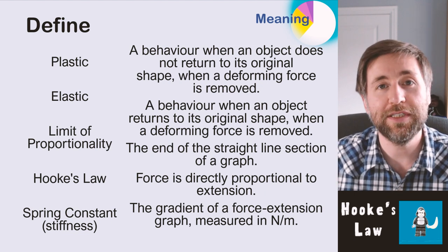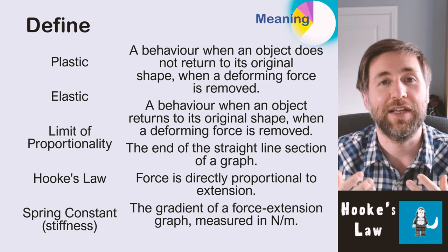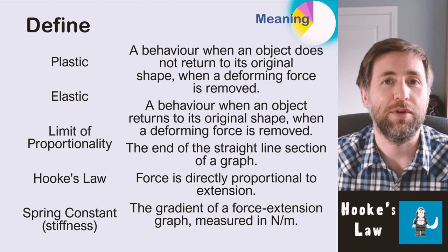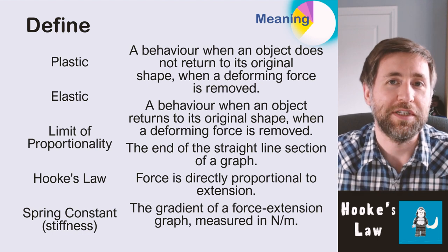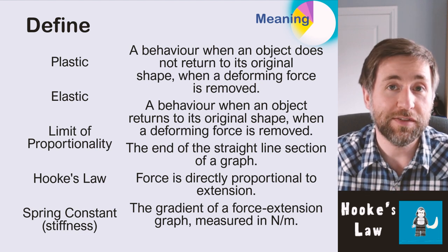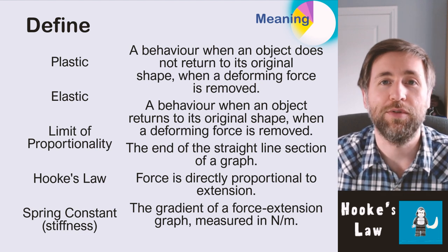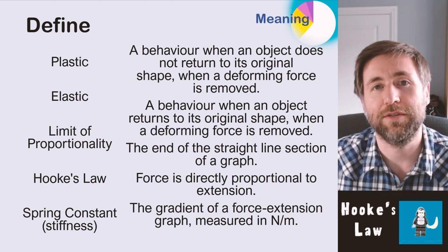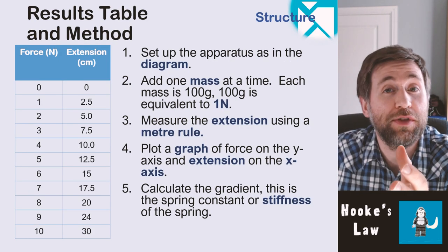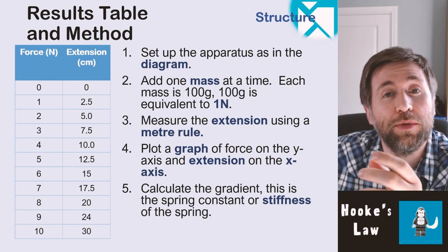It's a straight line through the origin — if you double the force you double the extension. The spring constant, or stiffness of the spring, is the gradient of a force-extension graph. The steeper the graph, the stiffer the spring, the higher the spring constant. It's measured in newtons per meter — how many newtons do you need for each meter of extension.